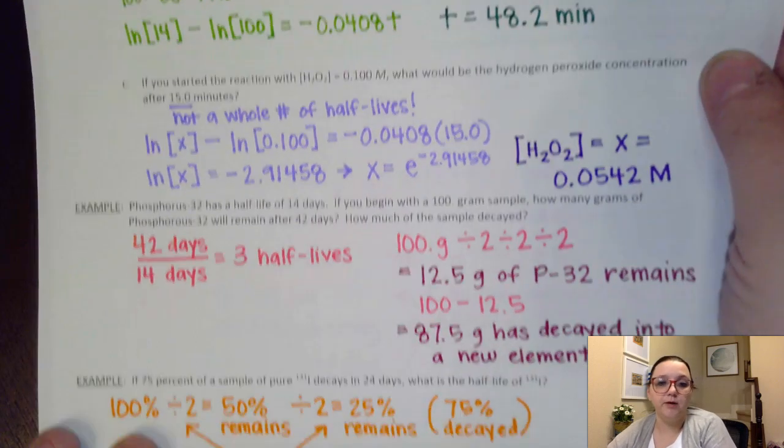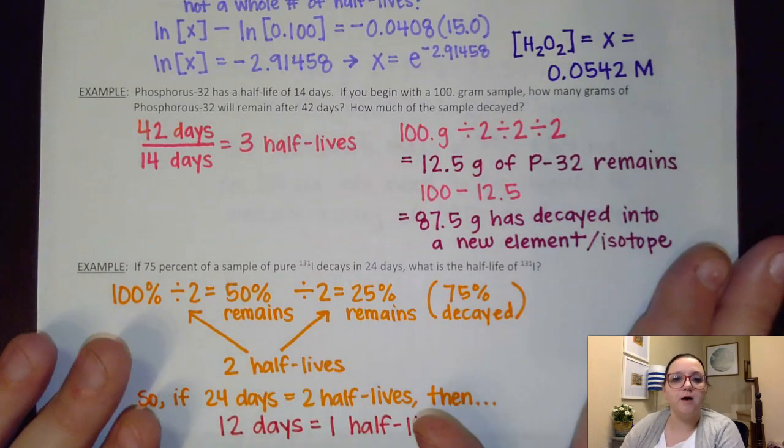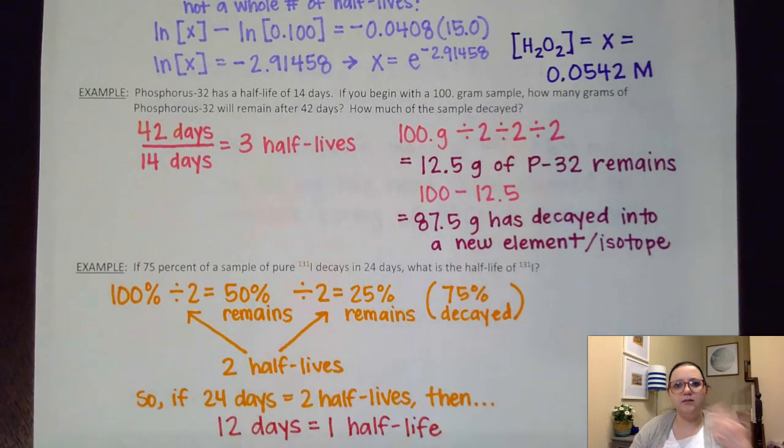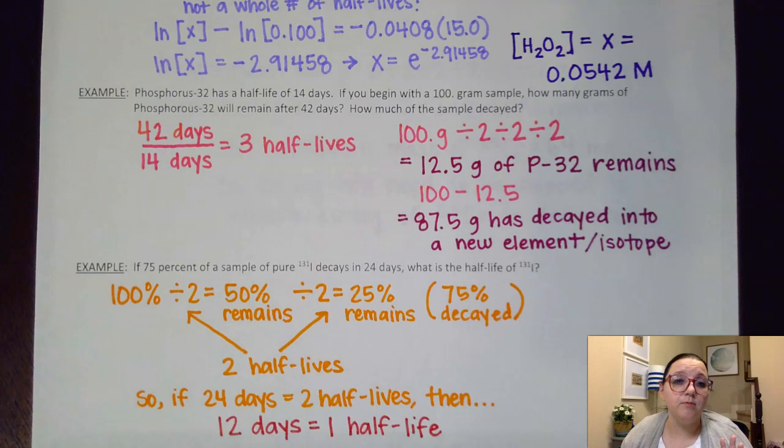That was a great problem to see where I needed to use integrated formula because my numbers weren't very user-friendly. So let's look at one where the numbers are user-friendly. This next example, I noticed it talks about phosphorus-32 and it talks about it decaying. So I have an isotope mentioned where they're talking about nuclear decay. And so I know without looking at this problem very much that this must be first order. All nuclear decay problems are first order.